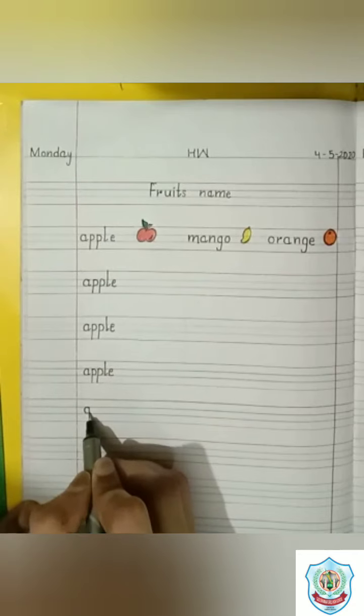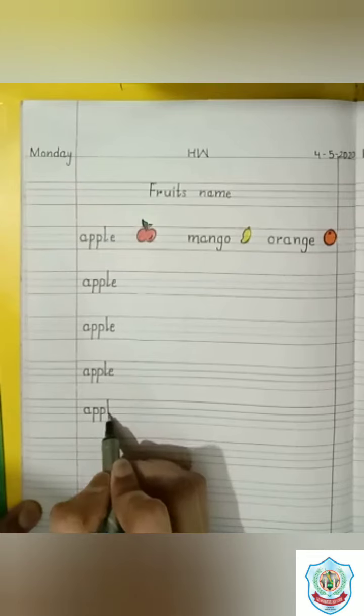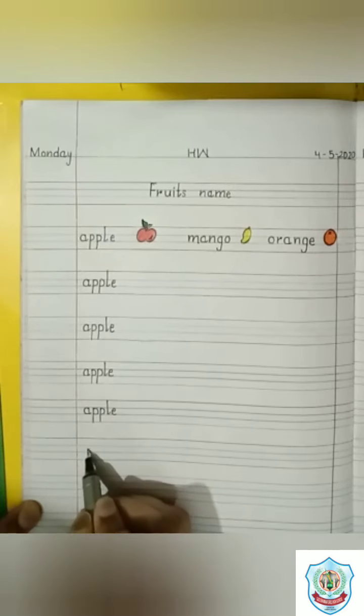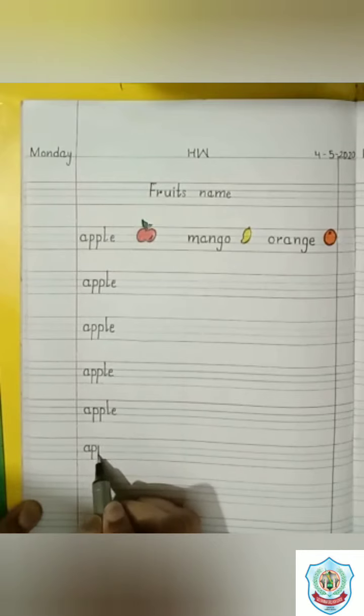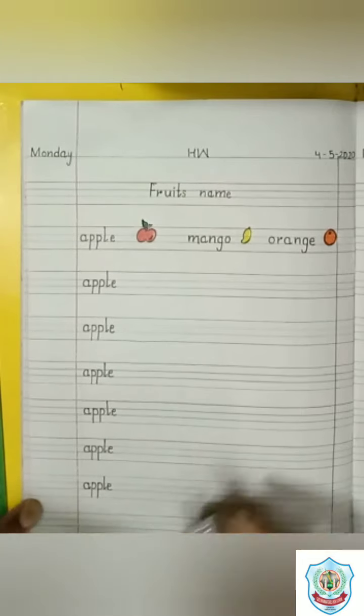A, double P, L, E. Apple. A has a sound A. Double P makes a sound P. And L, E makes a sound L. Apple. A, double P, L. Apple.